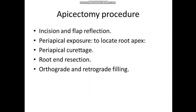The apicoectomy procedure includes several steps: incision and flap reflection, periapical exposure to locate the root apex — because all the surgical procedure involves the apical third of the tooth — periapical curettage, and root end resection. Actually, sometimes we can do root end resection before periapical curettage, while some operators do it after.